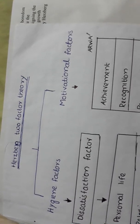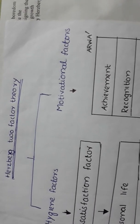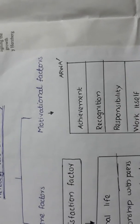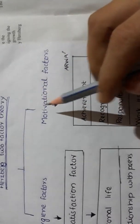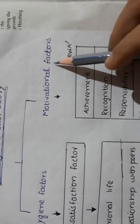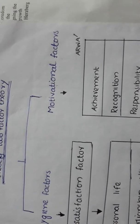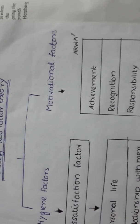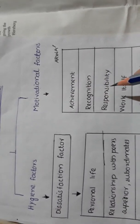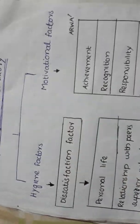Herzberg's Two-Factor Theory means workers have some kind of dissatisfaction. He has divided this into motivational factors and hygiene factors. Motivational factors are the factors which promote the workers to motivate, for example: achievement, recognition, responsibility, work itself, advancement, and growth.